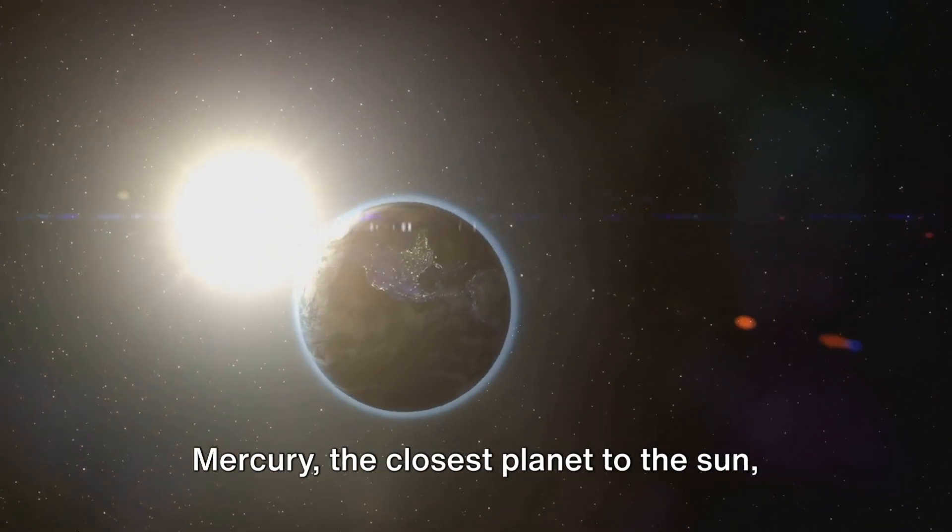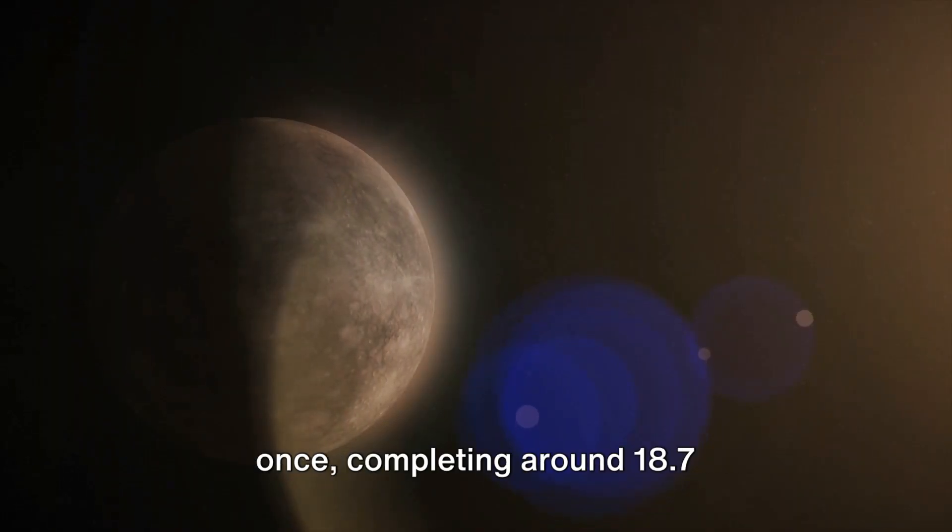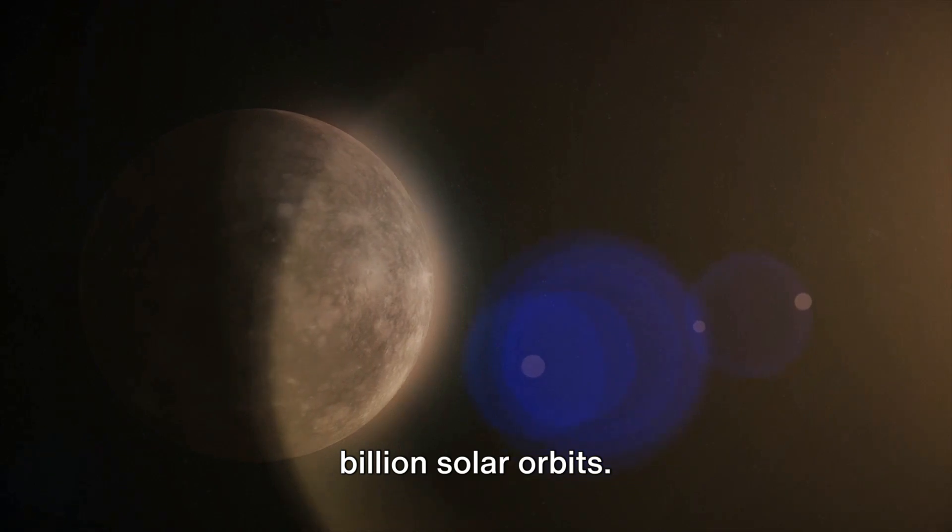Mercury, the closest planet to the sun, requires only 88 days to orbit the sun once, completing around 18.7 billion solar orbits.